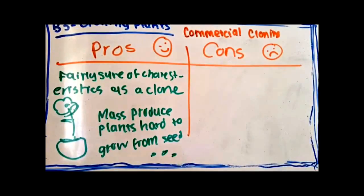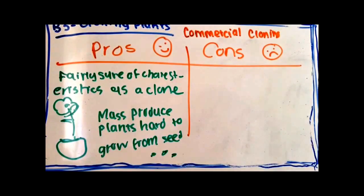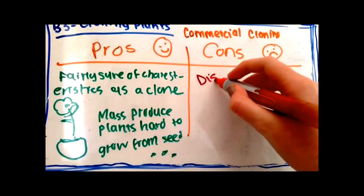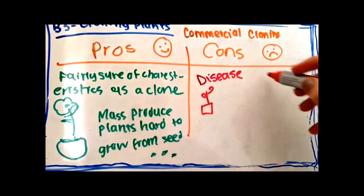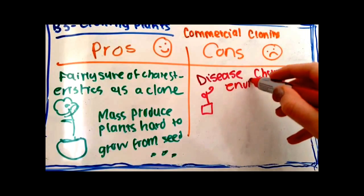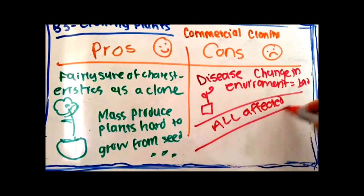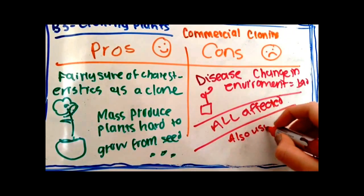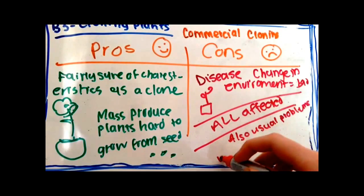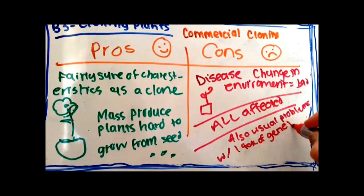However, there are some negative sides to this. If the plant suffers from a disease or starts doing badly because of a change in environment, then they'll all have the same problems because they all have the same genes. There are also the usual problems that come with lack of genetic variation.